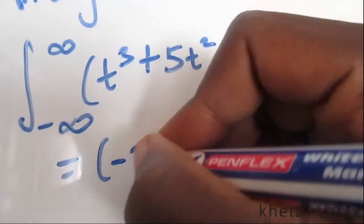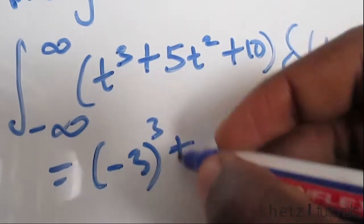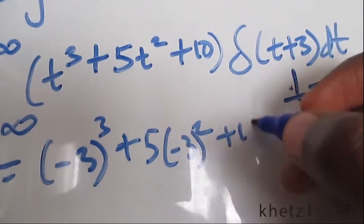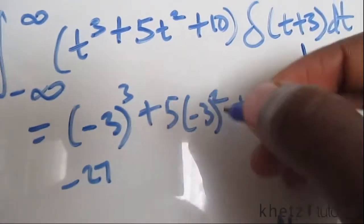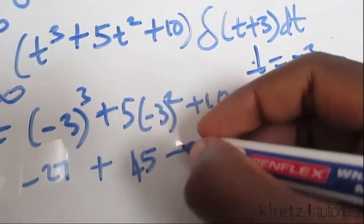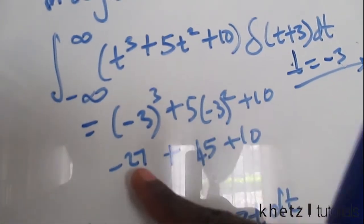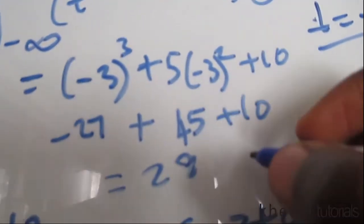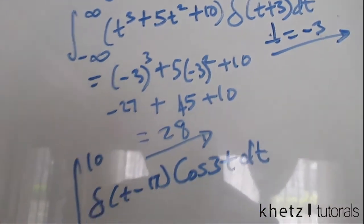The answer is found after substituting minus 3 into this function. Here we're going to have negative 27, here we are going to have 9 multiplied by 5 which is 45, and here we're going to have 10, so that is 55. Then 55 subtract 27 is 28, and that is your answer for the first integral: 28.